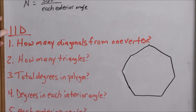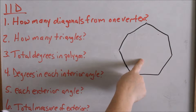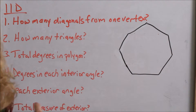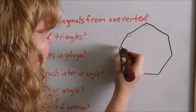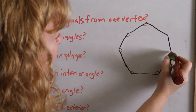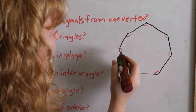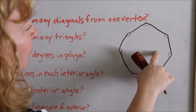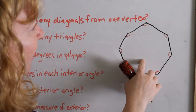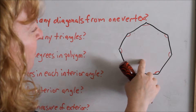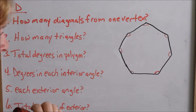Look at problem 11d. You have a polygon with seven sides. To my knowledge, I don't know if there's a name for a seven-sided polygon, but each angle — if there are seven sides, there are also seven angles. Remember, regular means every angle is congruent.